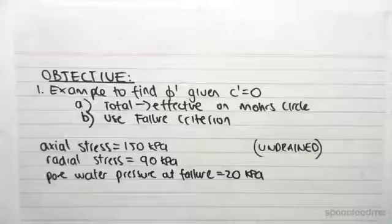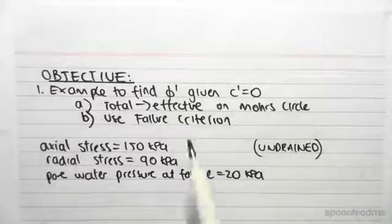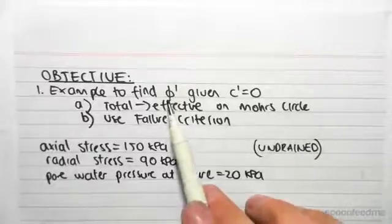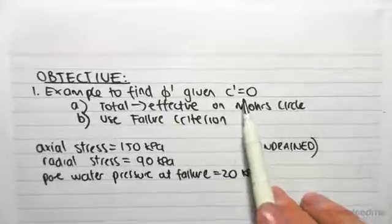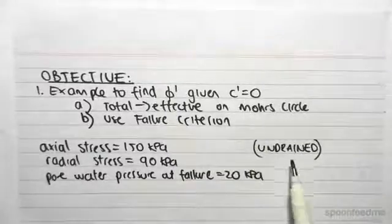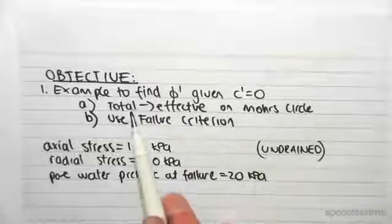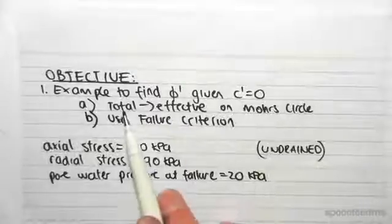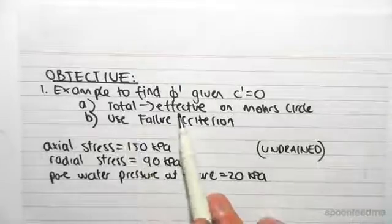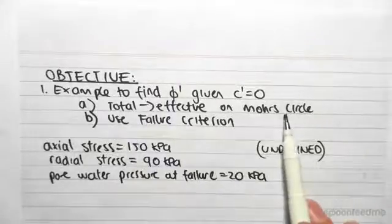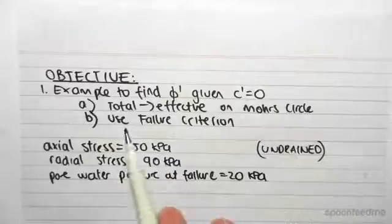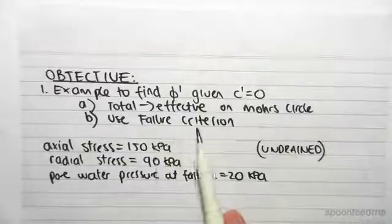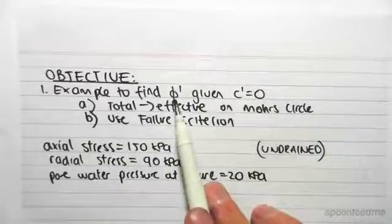The objective of this video is to find phi dash given c dash for an undrained case. We do that by going from the total stress to the effective stress on Mohr's circle, and then we use our failure criterion to find phi dash.